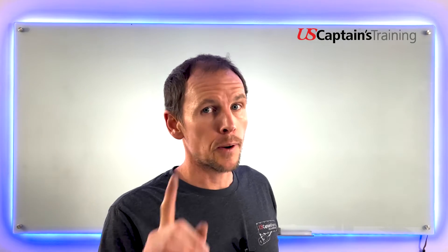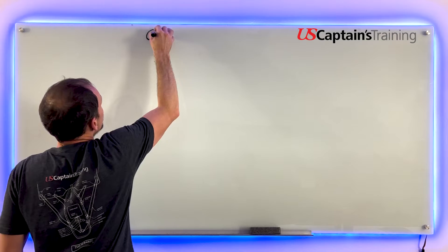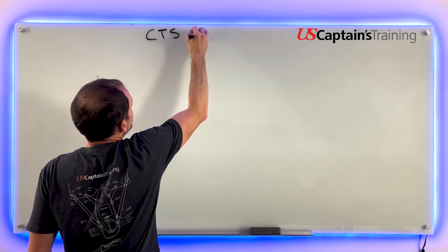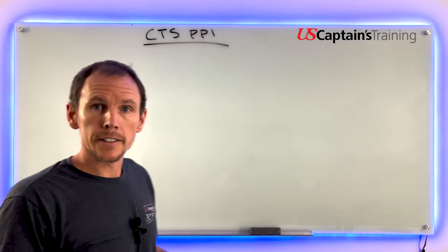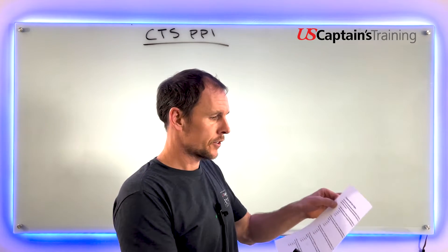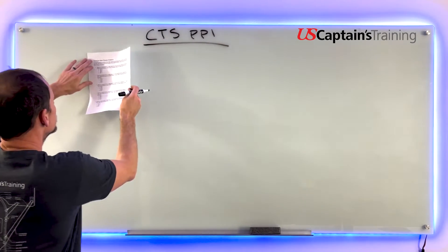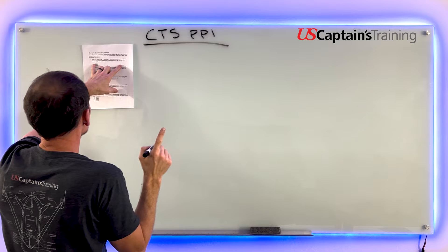Course to steer practice problem one, let's get into it. We need to collect all of our information. Problem one reads: while on a course of 34 degrees true...